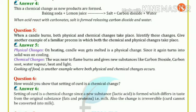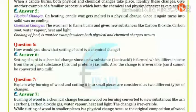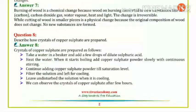Chemical change: when we burn the wax, new substances form - carbon soot, water vapor, heat, and light. That's a chemical change. Cooking of food is another example where both physical and chemical changes take place.